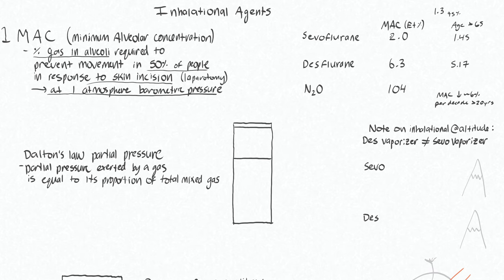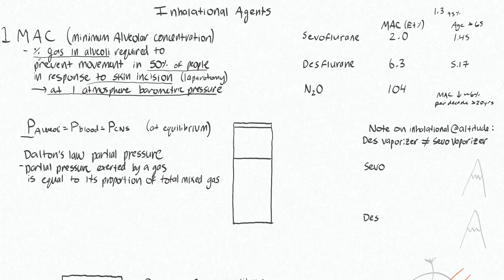All these percentages of gas that achieve one MAC are dependent on this occurring at one atmosphere of barometric pressure. What we actually care about is the partial pressure of the gas in the alveoli. That pressure equilibrates with the pressure the gas exerts in the blood, and also the pressure it exerts in the central nervous system — this is of course at equilibrium.